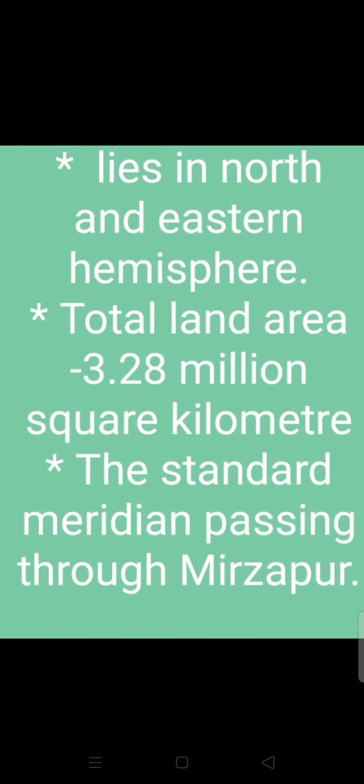The landmass of India has an area of 3.28 million square kilometers, and India's total area accounts for about 2.4 percent of the total geographical area of the world. India is bounded by the young fold mountains — the Himalayas — in the northwest, north and northeast. India is called a Peninsula as it is surrounded on three sides by water bodies. The standard meridian lies at 82 degrees 30 minutes east, passing through Mirzapur, and is taken as the standard time line for the whole country.